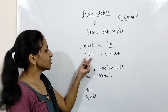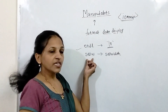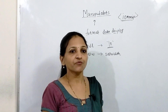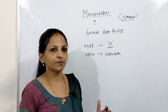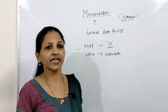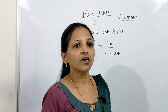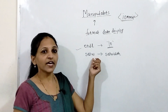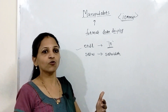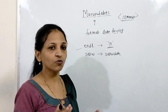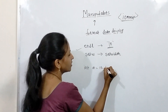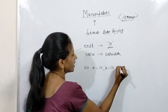The next manipulator is setw. We can use setw to set the field width. If you are going to display any string or the value of a variable, before displaying you can set the field width, and according to that field width the output will be displayed. Let's see an example: a equals 15, b equals 10, and c equals 150.